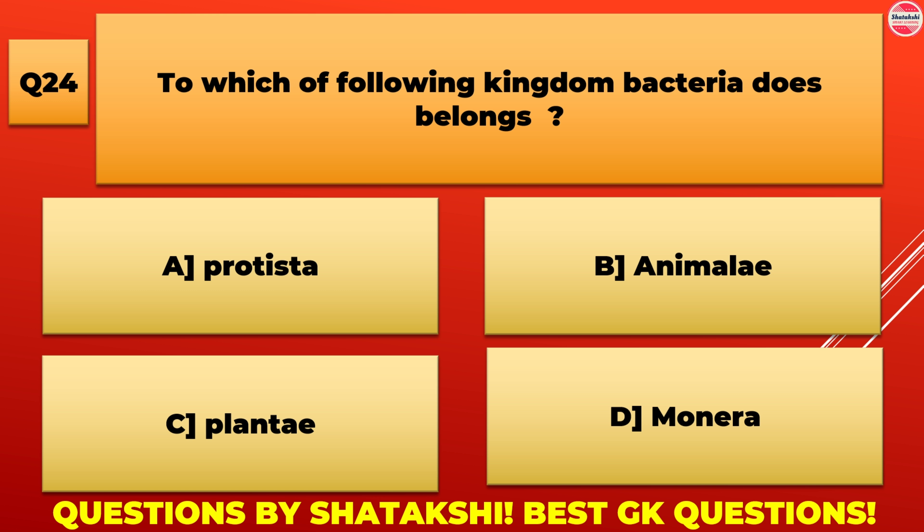Uncontrolled cell division in certain tissues and organs — for example, lung, breast, bone marrow — is called: A. Cancer, B. Tuberculosis, C. AIDS, D. Cholera. A. Cancer is the correct answer.